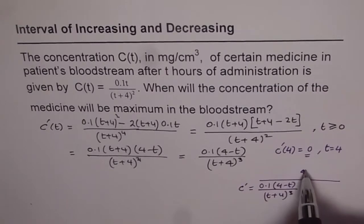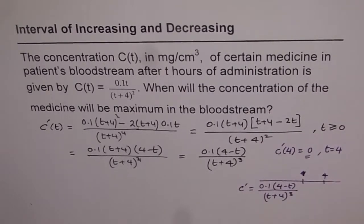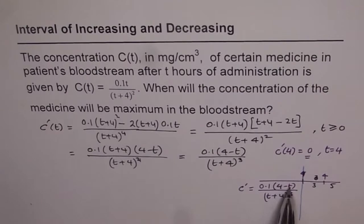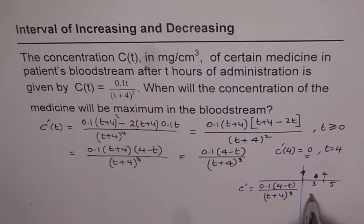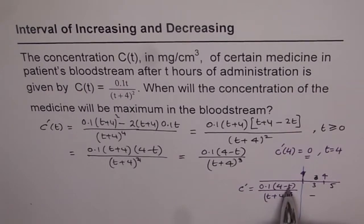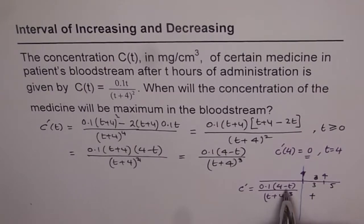Let us take test points on either side of 4 — say T = 3 and T = 5. When T = 3: 4 - 3 = 1, which is positive, and the denominator is also positive, so C'(3) is positive. When T = 5: 4 - 5 = -1, which is negative, so C'(5) is negative.